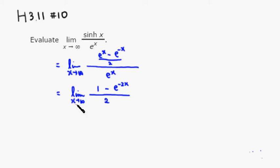As x approaches infinity, this is going to be e to the negative infinity, so this is going to approach 0. You can think of this as 1 over e to the 2x. As x gets larger and larger, the denominator gets larger and larger, which means that the fraction gets closer to 0. Then what's left is 1 half.